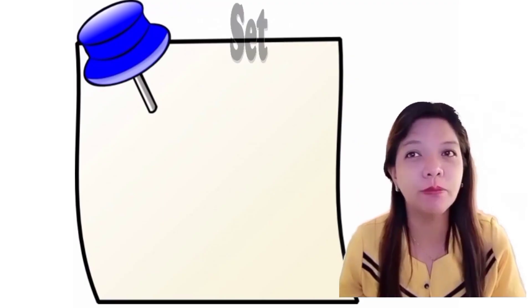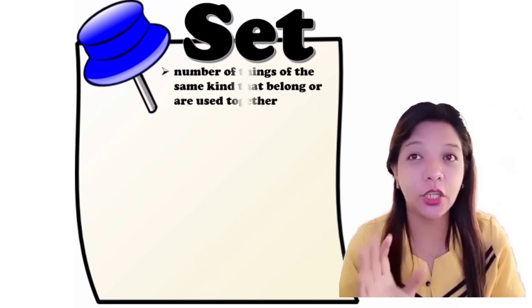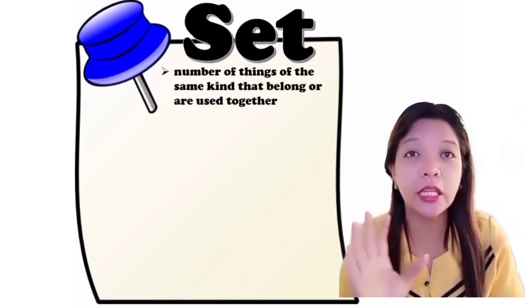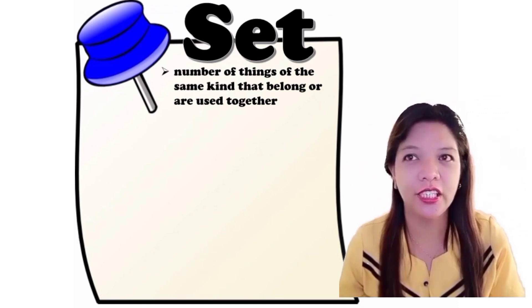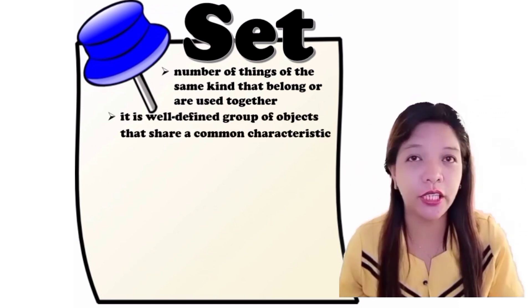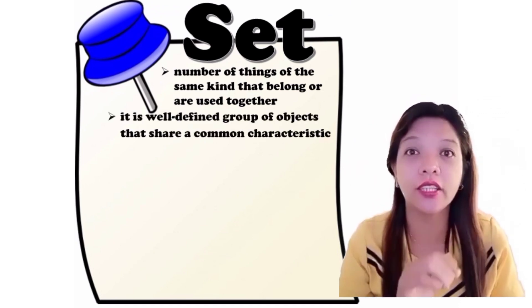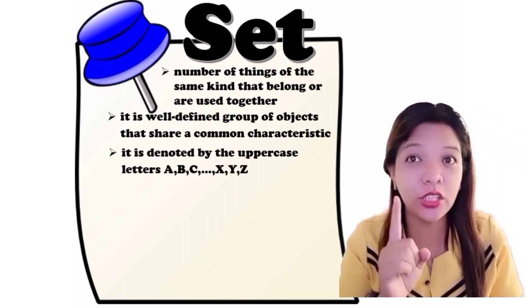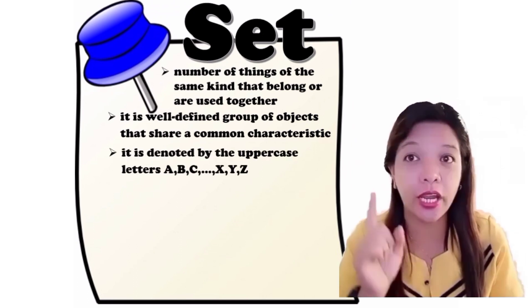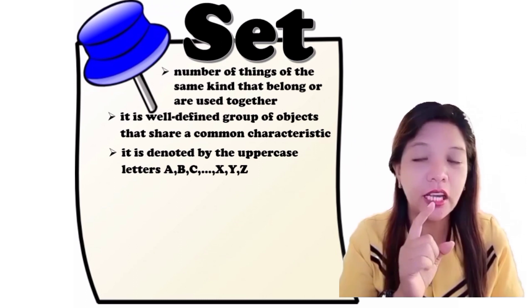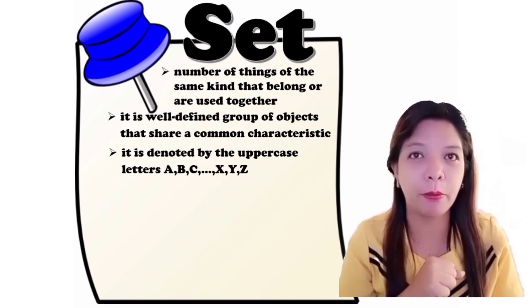Our topic for today is all about SET. SET is a number of things of the same kind that belong or are used together. It is a well-defined group of objects that share a common characteristic. It is denoted by the uppercase letter A, B, C and up to X, Y, Z of the alphabet.